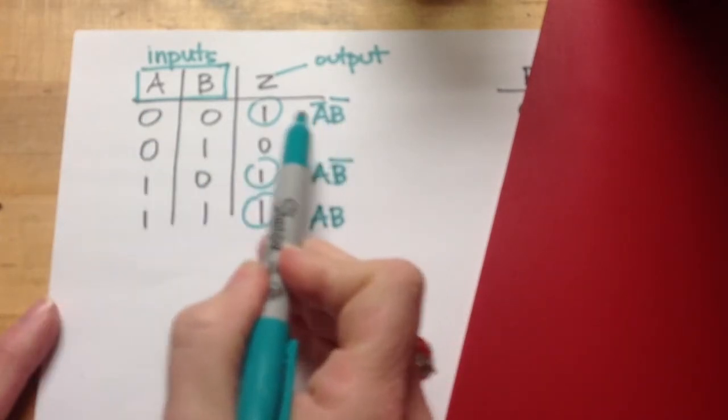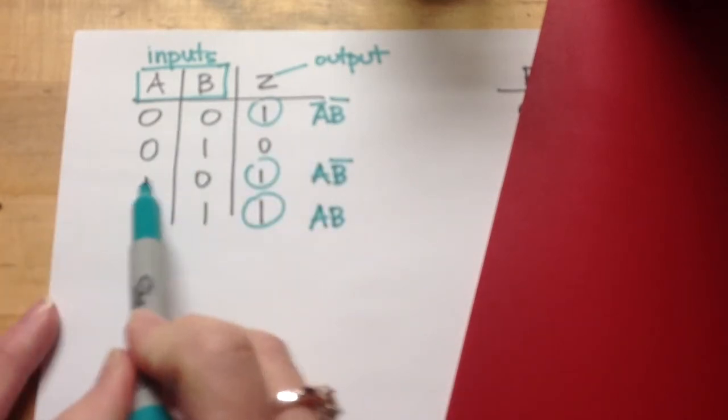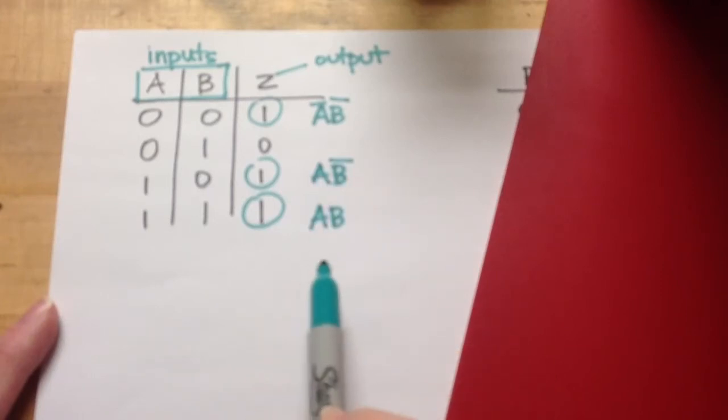So where it's a 0, where the input is a 0, it's not. So this is not A, not B. And where it's a 1, it's the letter. So this is A, not B, this is A, B.